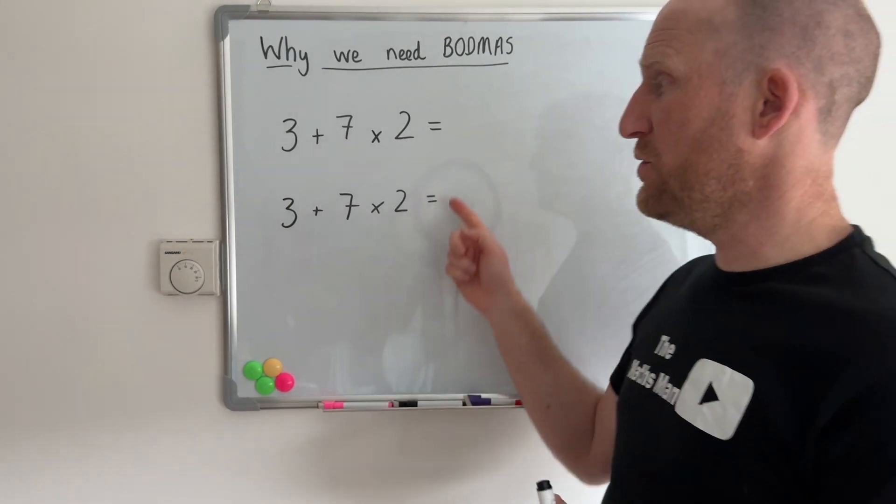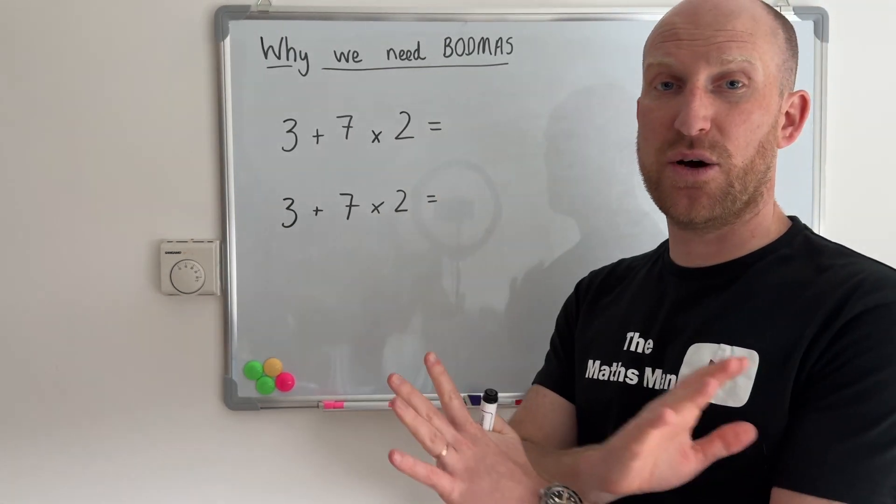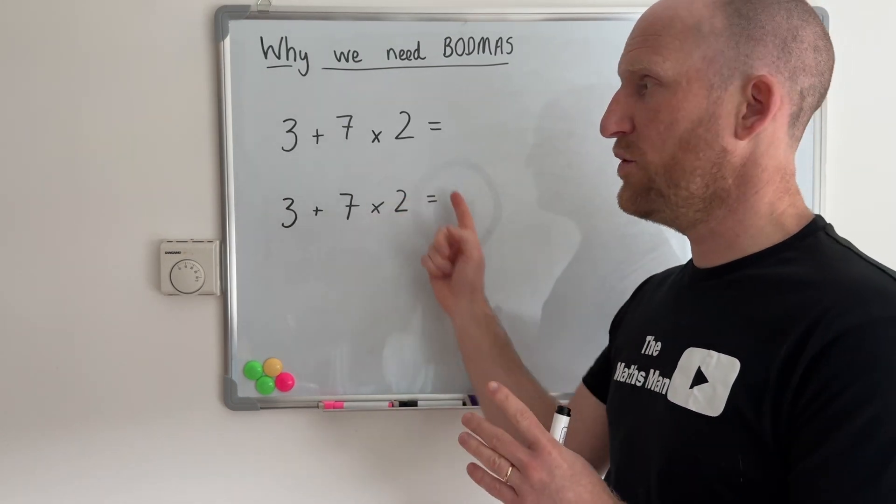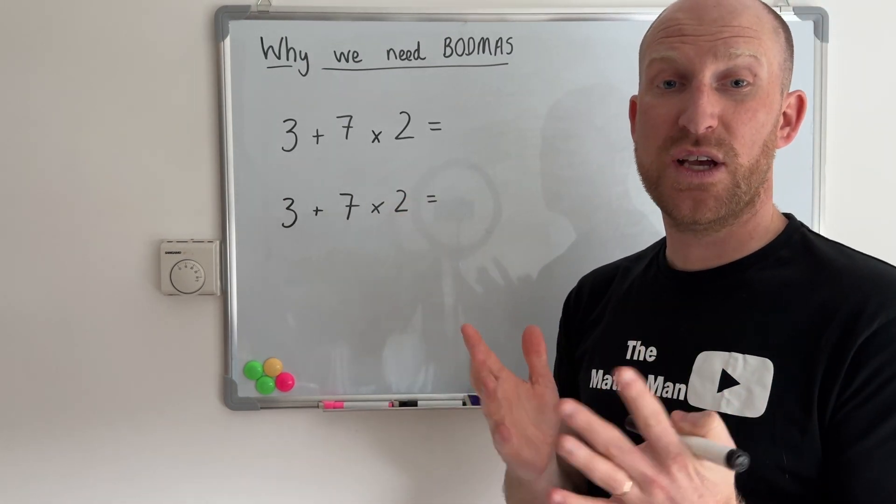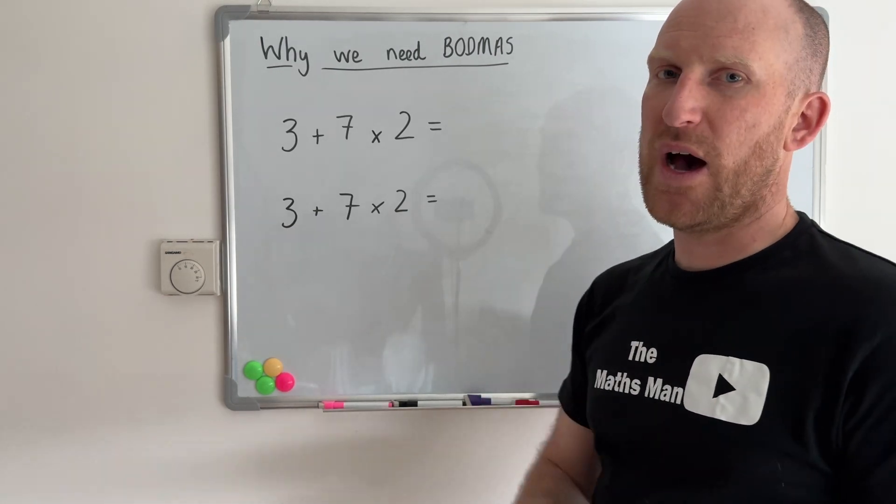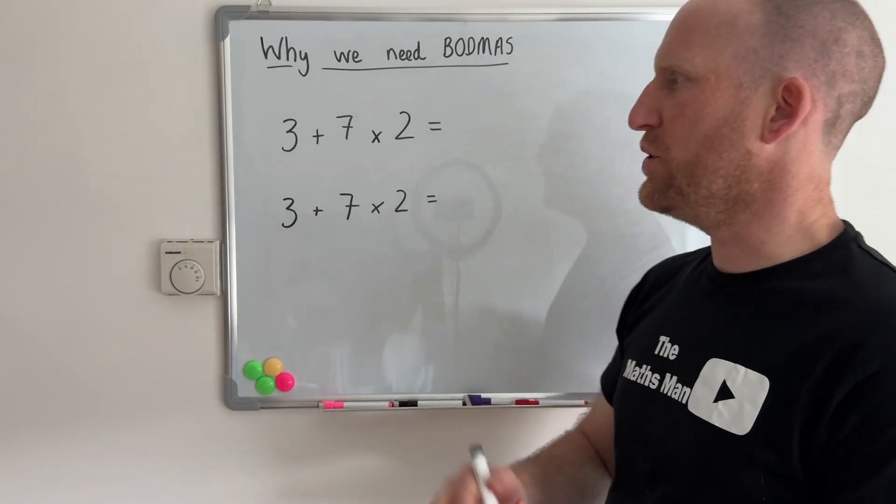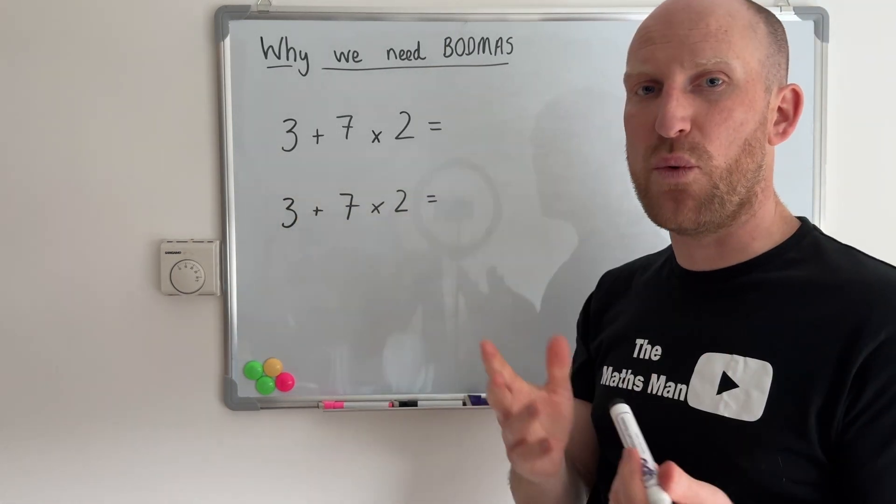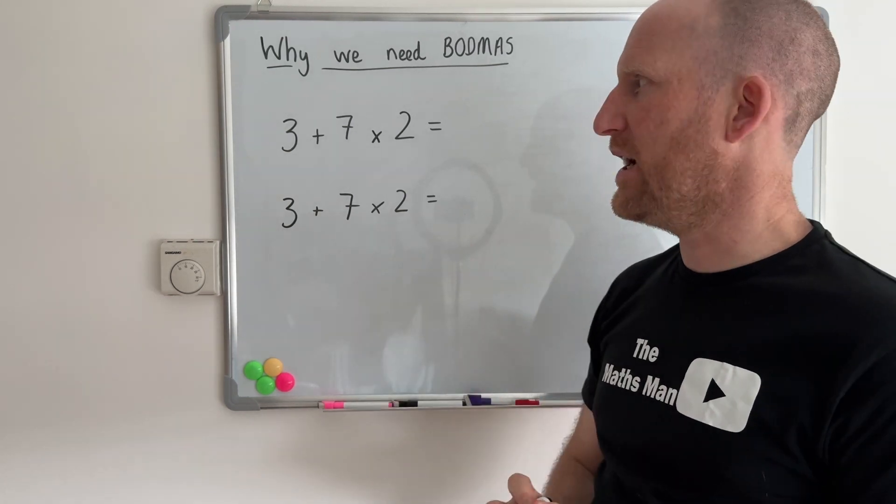So I have two number sentences which are completely the same but depending on how I solve these two questions can actually give me two different answers. So if I just do what most people do and just start from the left and go to the right and solve it that way, look at what answer I get.